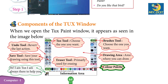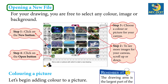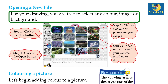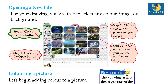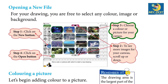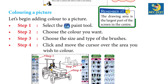Brush tool: choose the one you want. Drawing area: the area where you can draw. Color palette. Opening a new file for your drawing — you are free to select any color, image, or background. Step 1: Click on the new button. Step 2: To see more images for your canvas, scroll up or down. Step 3: Choose a color or picture for your canvas. Step 4: Click on the open button.